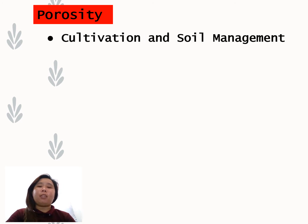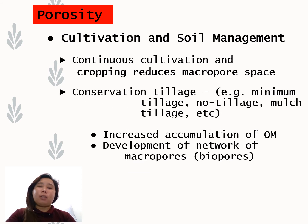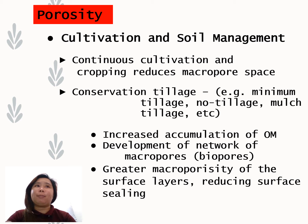Another factor affecting soil porosity is cultivation and soil management. Continuous cultivation, tillage, and cropping reduce macropores. However, conservation tillage — such as minimum tillage, no-till, or mulch tillage — can increase accumulation of organic matter, develop a network of macropores or biopores, and create greater macroporosity, which reduces surface sealing when there is greater macroporosity of the surface layers.